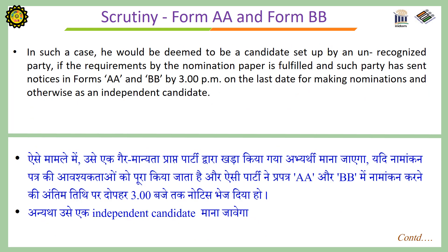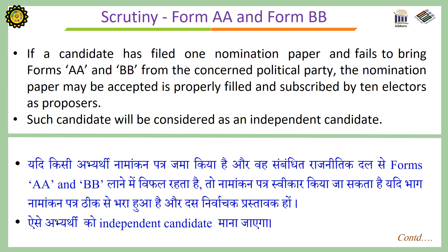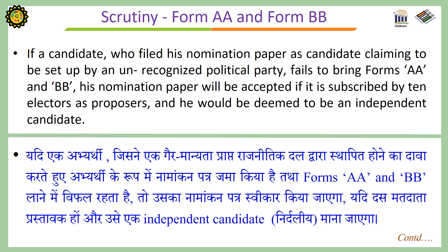In such a case, the candidate would be deemed to be a candidate set up by an unrecognized party if the requirements of the nomination paper are fulfilled and such party has sent notices in Form AA and BB by 3 pm on the last date for making nominations, and otherwise as an independent candidate. If a candidate has filed one nomination paper and fails to bring Forms AA and BB from the concerned political party, the nomination paper may be accepted if it is properly filled and subscribed by ten electors as proposers — such candidate will be considered as an independent candidate. Similarly, if a candidate who filed his nomination paper as a candidate claiming to be set up by an unrecognized political party fails to bring Forms AA and BB, his nomination paper will be accepted if subscribed by ten electors as proposers, and he would be deemed to be an independent candidate.